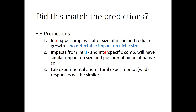So what does that mean for the three predictions? The most relevant is prediction number one, which stated that inter-specific competition should alter the size of the niche and reduce growth. Well, they don't actually have any detectable impact on niche size, so that disagrees with their first prediction.